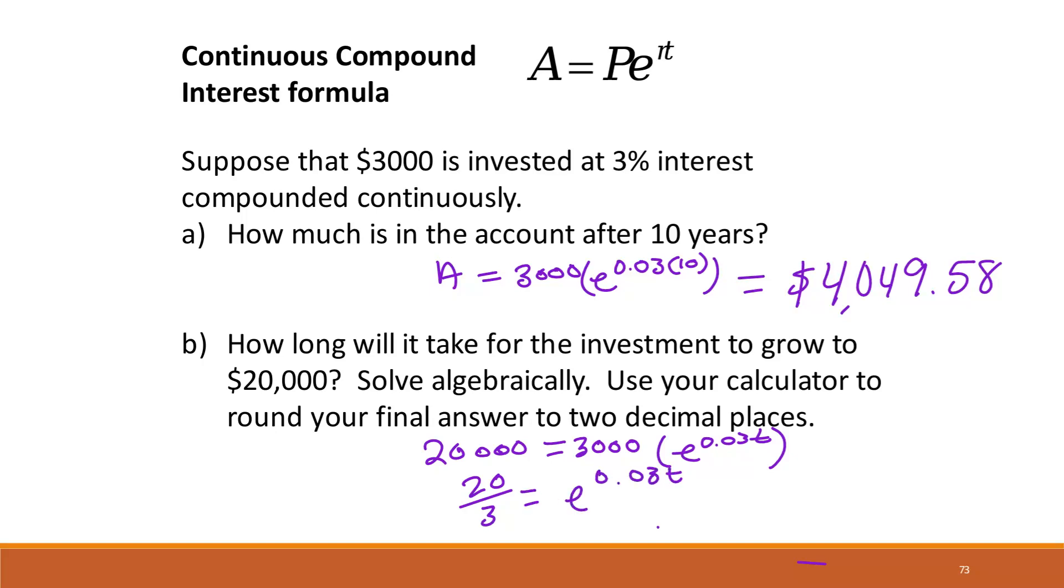Then when we change it to a logarithmic, we will get, since I have e here, I'm going to use ln. ln of 20 over 3 is equal to 0.03t. So t is equal to ln of 20 over 3 divided by 0.03. So t is approximately 63.24 years.